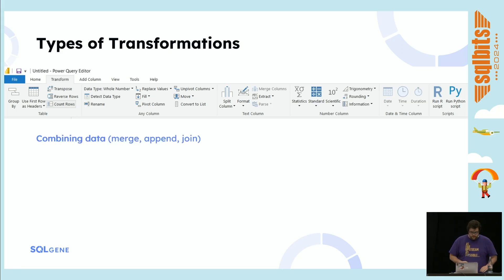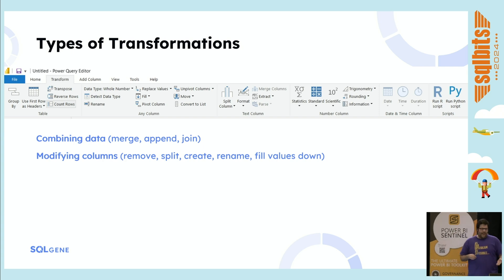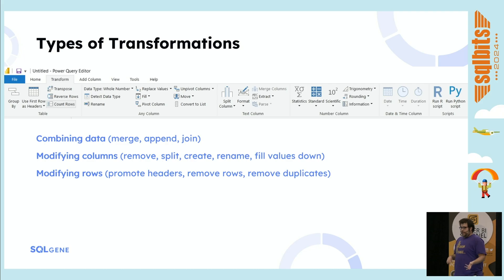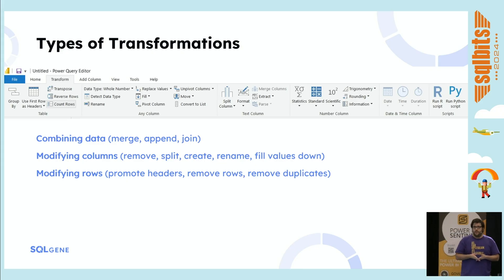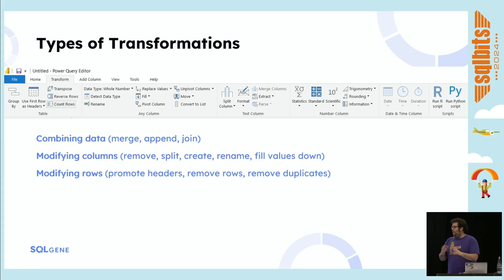Some ways I think about it: combining data is generally one of the first things I'll be doing — do I have to do any joins, any appends? I'll be making changes to columns, splitting a column, changing a data type, adding new columns, modifying rows. This is extremely common when dealing with CSV files or flat files, because you have to promote headers or make changes to them. It's also very common when dealing with time-related data, because for Power BI reporting you only need the last couple of years — compare this year to last year and maybe a few other changes.